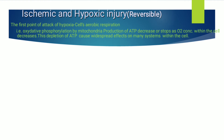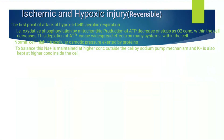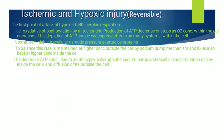In a normal cell, high intracellular osmotic pressure is exerted by proteins. Calcium outside the cell is 10,000 times higher than inside. Potassium is higher inside the cell, sodium is higher outside, calcium is higher outside and lower inside, and protein is higher inside and lower outside. To balance this, sodium is maintained at higher concentration outside the cell by the sodium pump mechanism, and potassium is kept at higher concentration inside the cell.